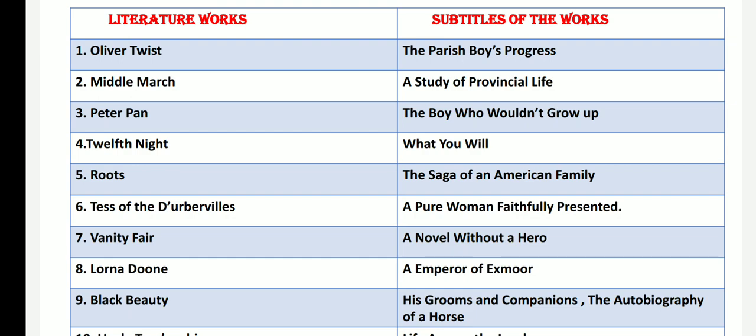Oliver Twist, the second novel of Charles Dickens, is called as The Parish Boy's Progress. Middlemarch by George Eliot is called as A Study of Provincial Life.